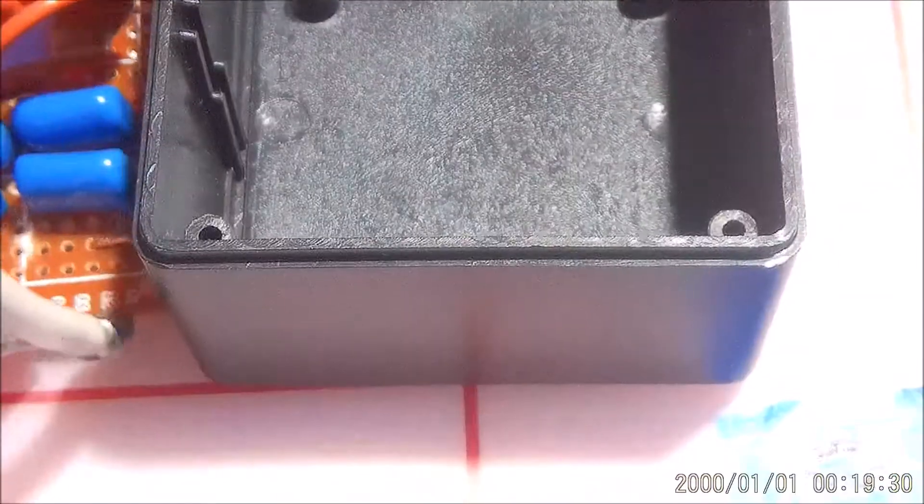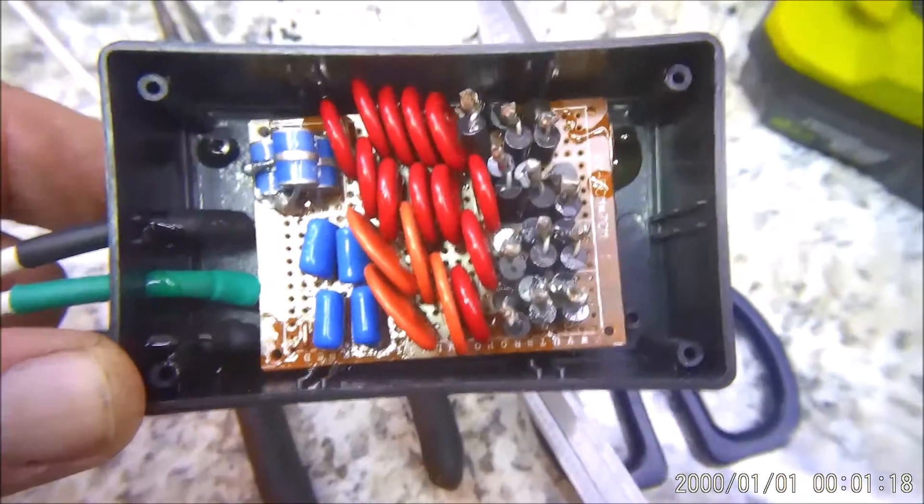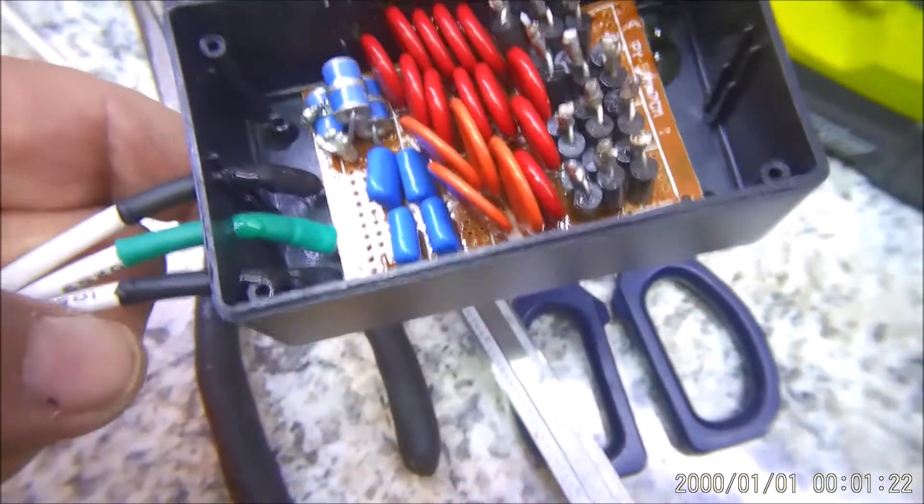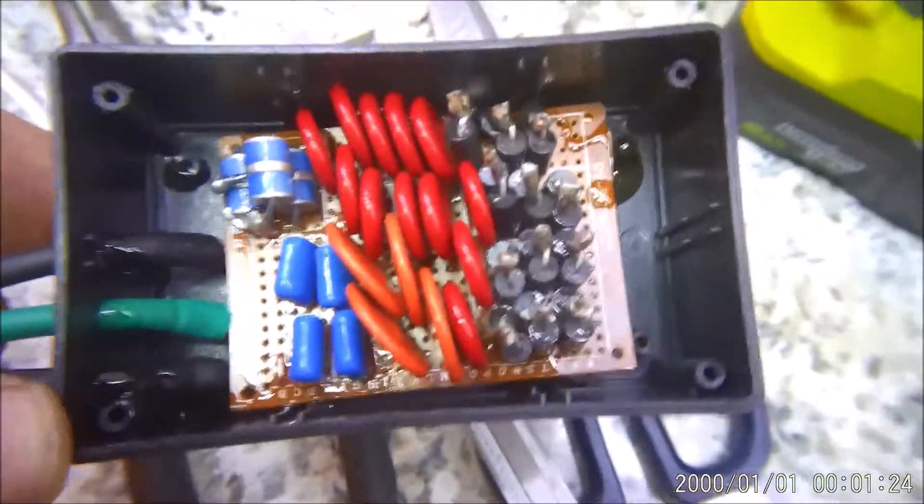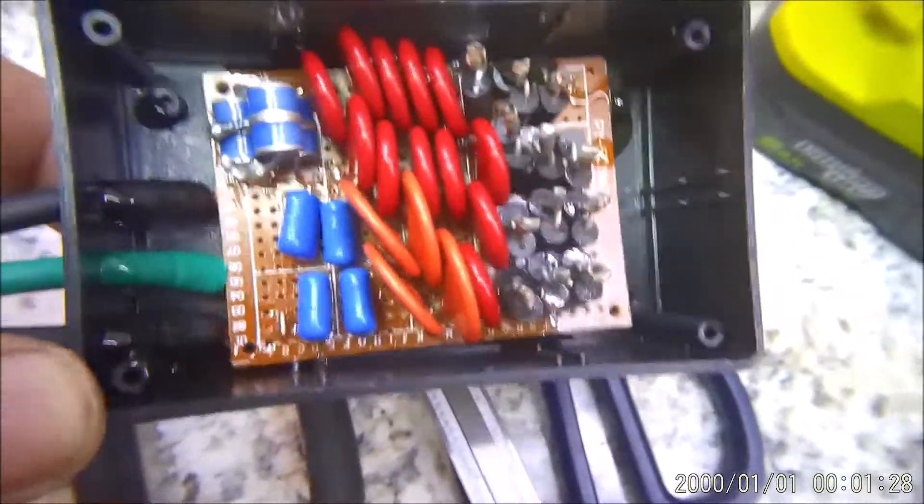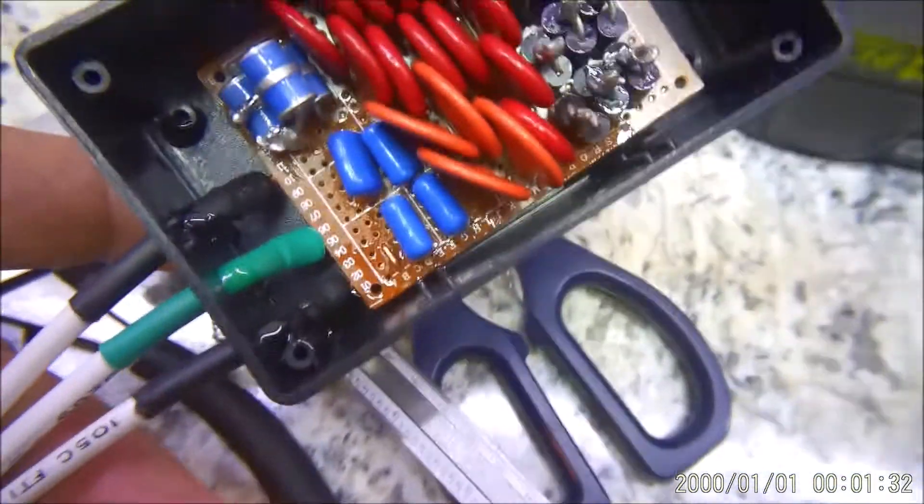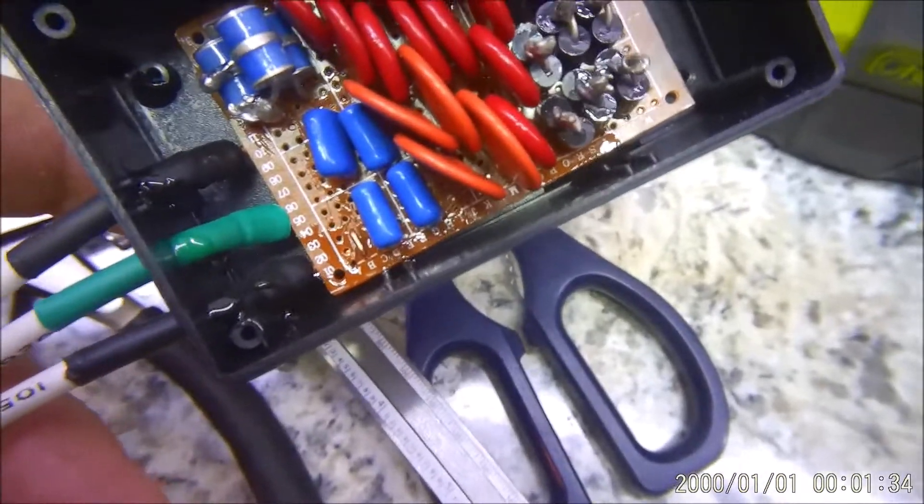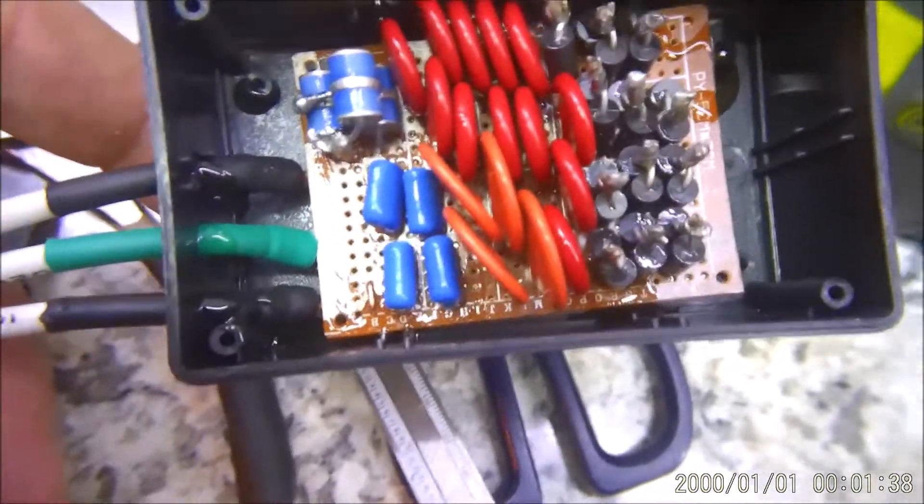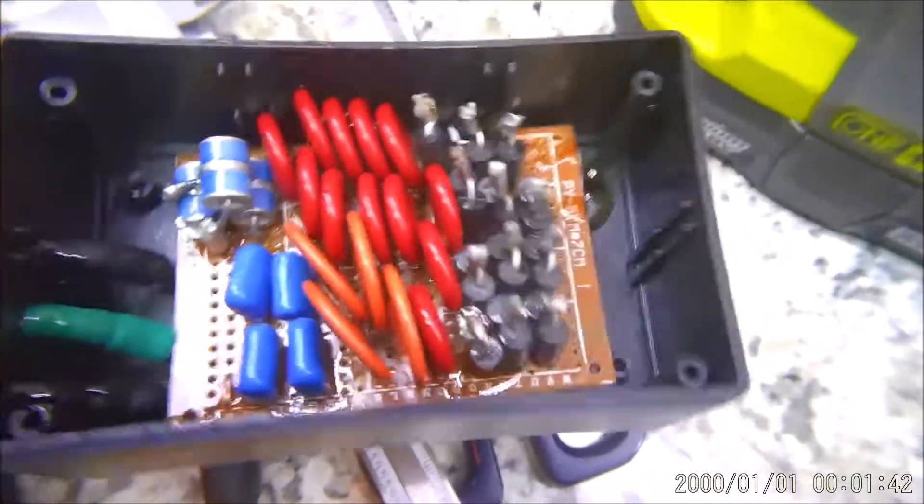Here's a quick picture of the 220 surge protector in the box. There we have it: green is ground, black is line one, and the other black is line two. That's it.